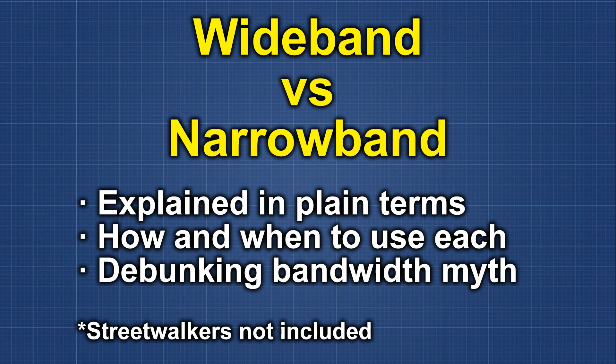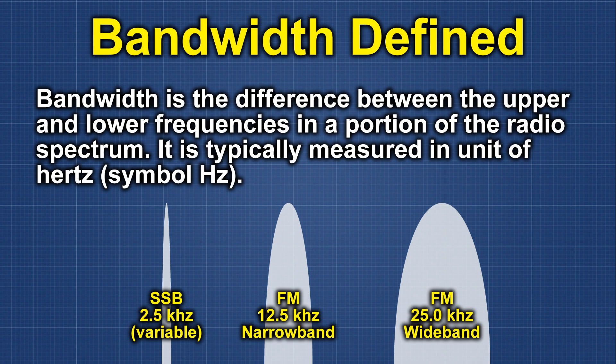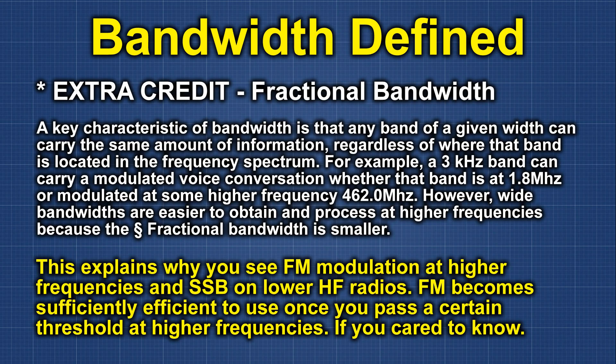So first we need to define bandwidth in a broad term. Bandwidth basically is a range of frequencies from high to low. When it comes to transmitting and receiving, the bandwidth generally has to deal with the mode in which you are operating — this would be where you set your frequency channel to either wideband or narrowband.